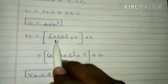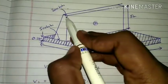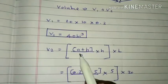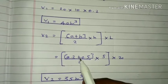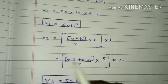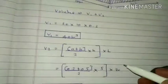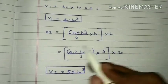First, the formula is A plus B by 2 into H into L. A is the top portion of the retaining wall and B is the bottom portion. A is 200mm, which is 0.2m. B is 500mm, which is 0.5m. Divided by 2. The retaining wall height H is 5m. Length L is 20m. So divide by 2.